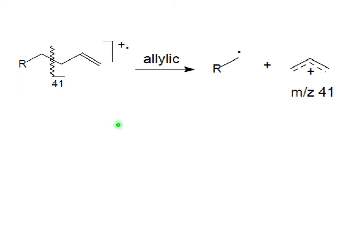One more example of a stable cation with aromaticity is the allylic cation. When you have a double bond, it will easily make a cation at m/z 41 — carbon-carbon-carbon. Whatever is left will go as a radical. This is a kind of marker for a double bond in your molecule.